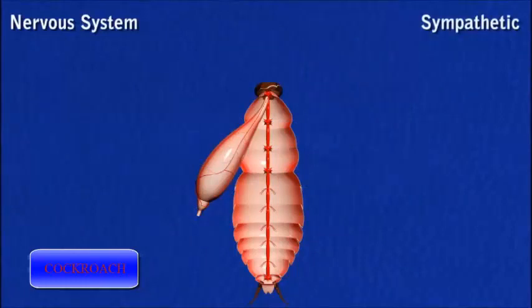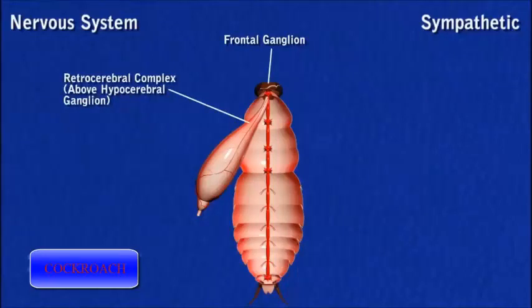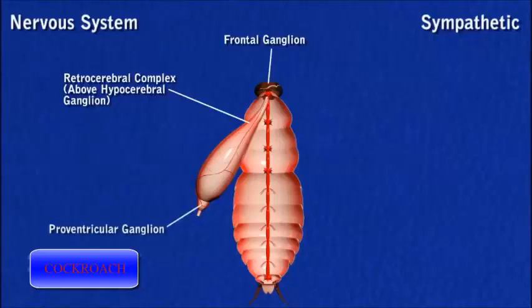The sympathetic nervous system comprises four ganglia and a retrocerebral complex. A frontal ganglion lies above the pharynx in front of the brain, a hypocerebral ganglion on the oesophagus, an ingluvial ganglion located on the crop, and a proventricular ganglion on the surface of the proventriculus.